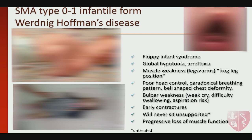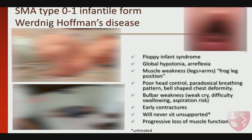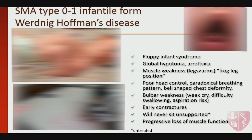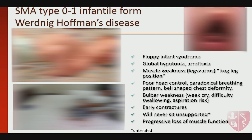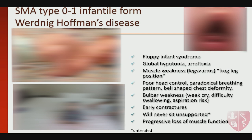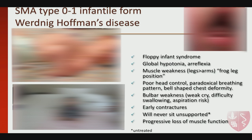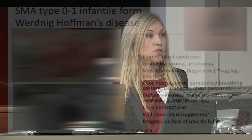These patients have poor head control, paradoxical breathing with a bell-shaped chest deformity, and bulbar weakness manifested by a weak cry, difficulty swallowing, and increased risk of aspiration. Very early presentations can also show early contractures at the elbows. The second video shows classic tongue fasciculations — an important place to look, though their absence doesn't exclude the diagnosis. Similarly, very low reflexes should prompt careful continued monitoring.